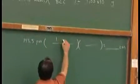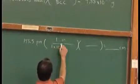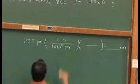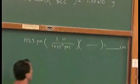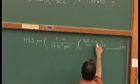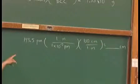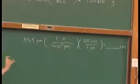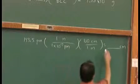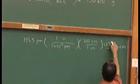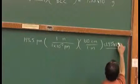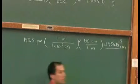1 meter is 1 times 10 to the 12th picometers, so the picometers will cancel. I gave myself another set of brackets here so I can show my work going into centimeters. If I move the decimal place over 10 times and 2 more, this is going to be 1.935 times 10 to the negative 8th centimeters.